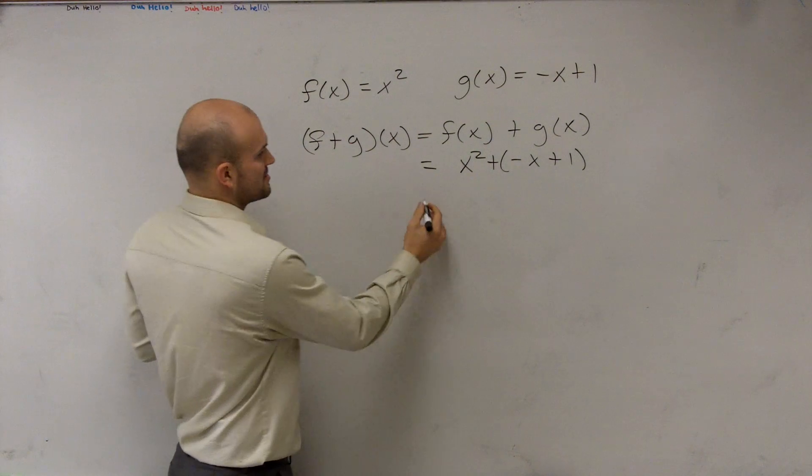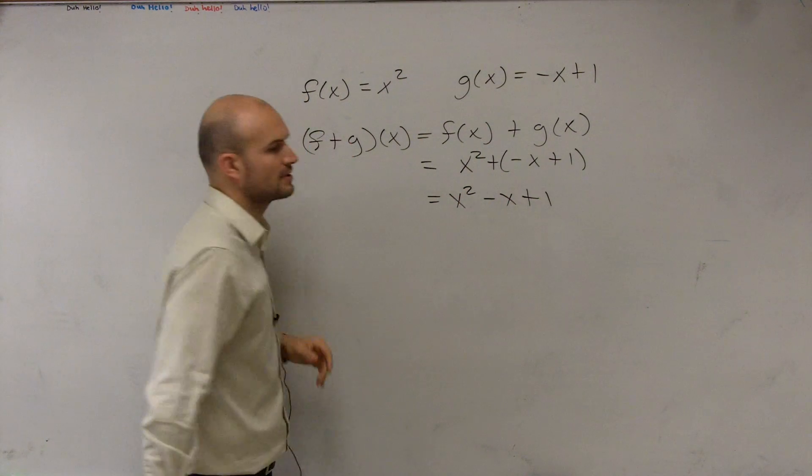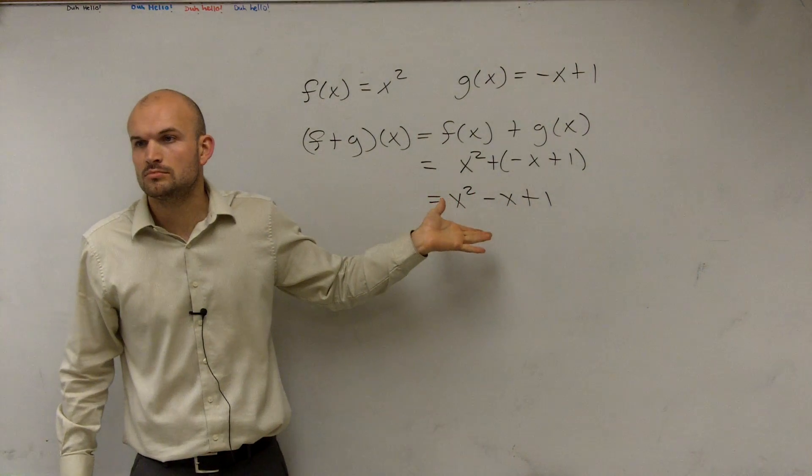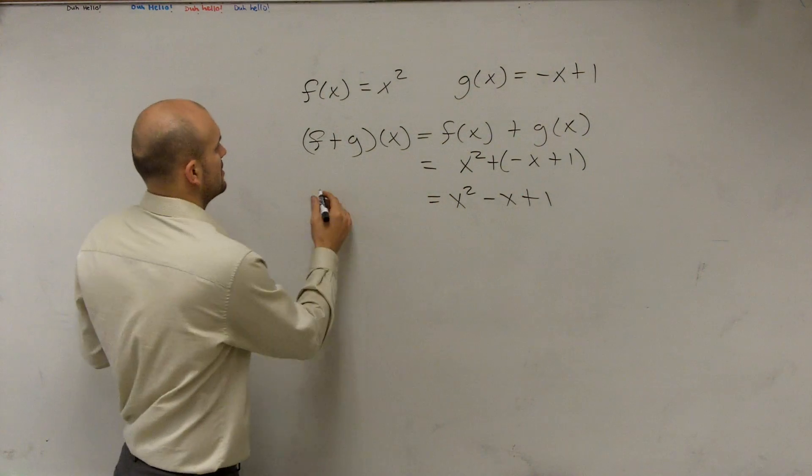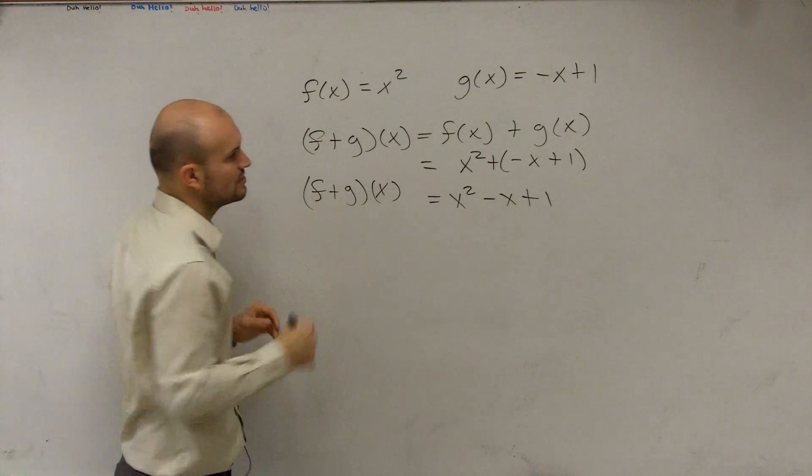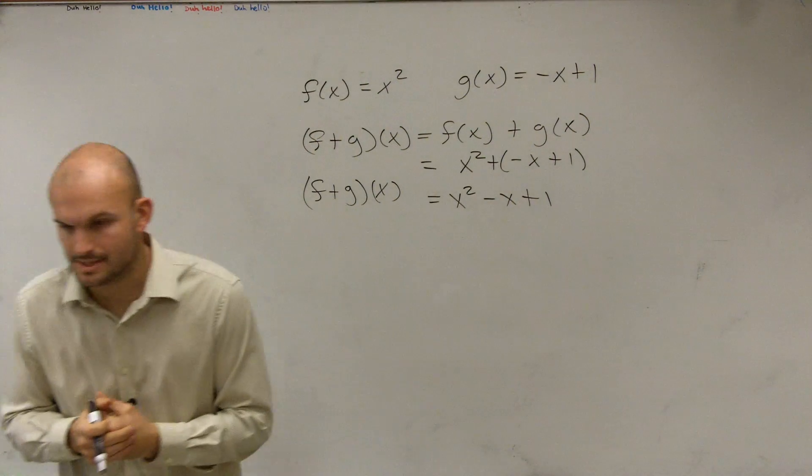Well, obviously, we don't need to include those parentheses. So x squared minus x plus 1. Now we look at this, and can we simplify this any further? No, you can't combine any like terms. So therefore, f plus g of x equals x squared minus x plus 1. That's it.